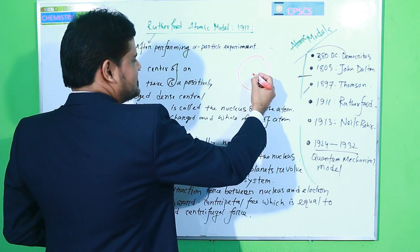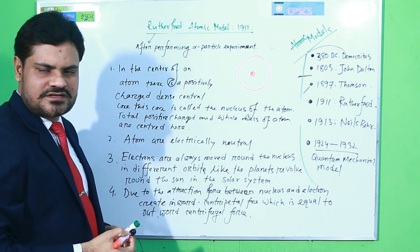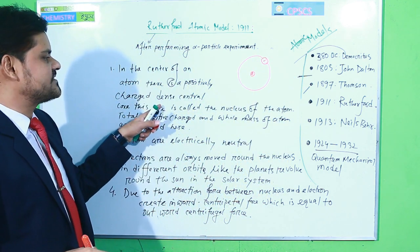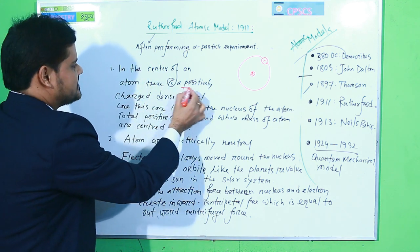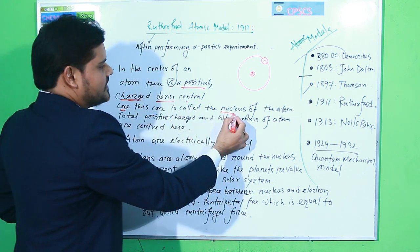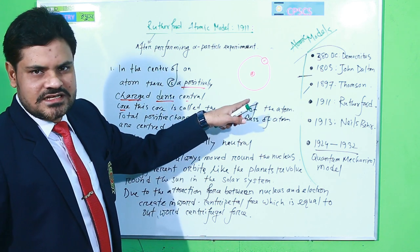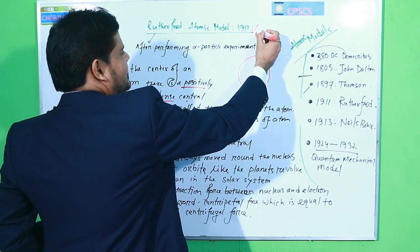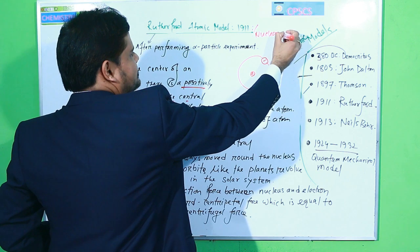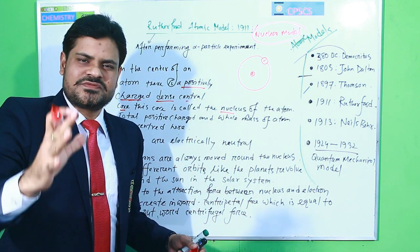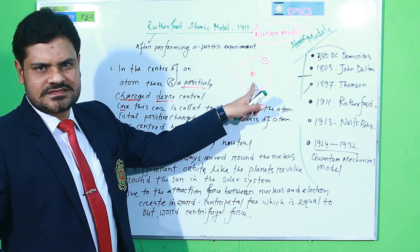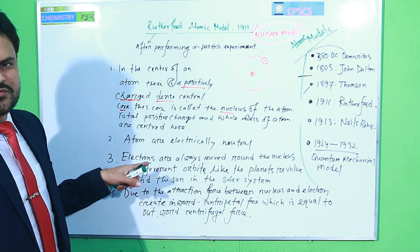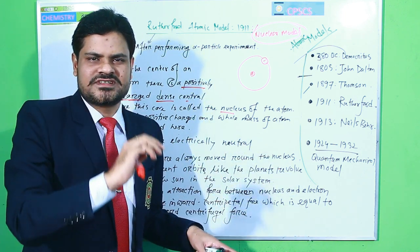Rutherford said the atom has two parts: the center and the outer part. At the center, there is a positively charged dense core called the nucleus. Rutherford discovered the nucleus, which is why this model is also called the nuclear model. The total positive charge and the total mass of the atom are concentrated in the nucleus.